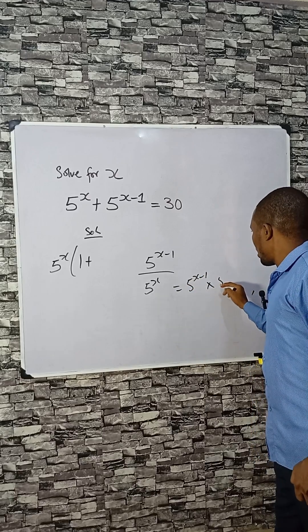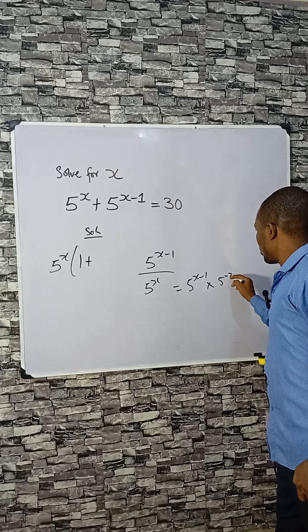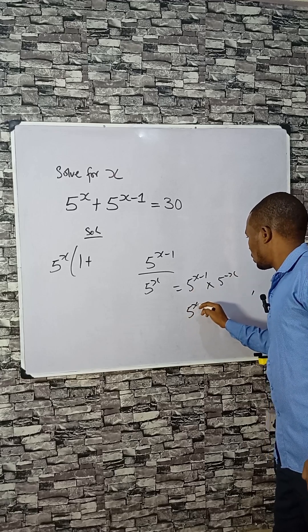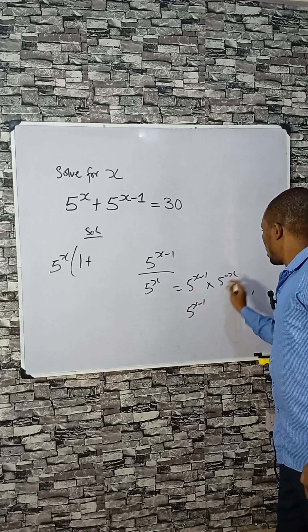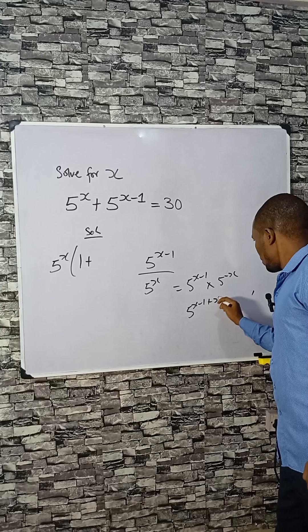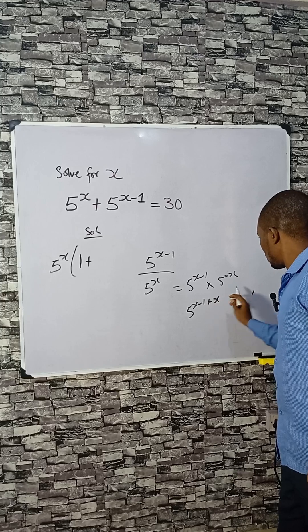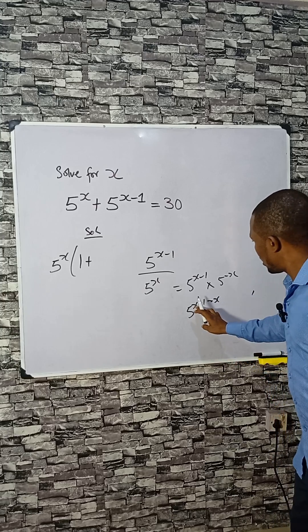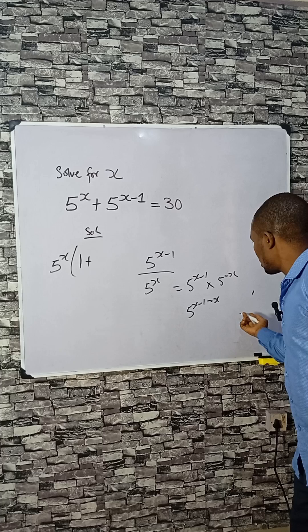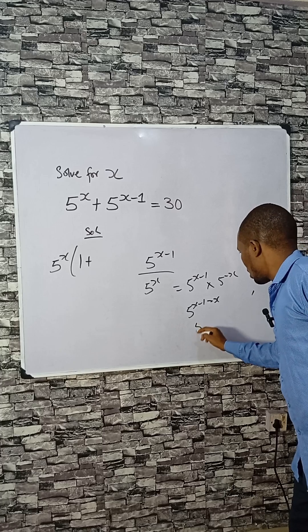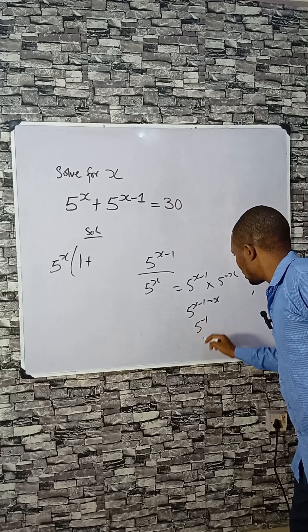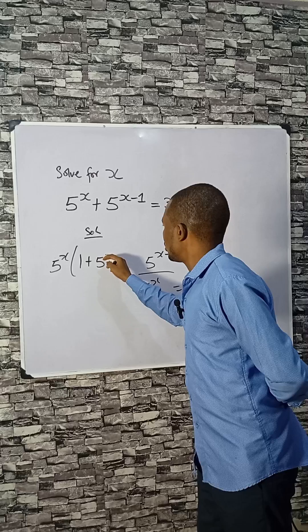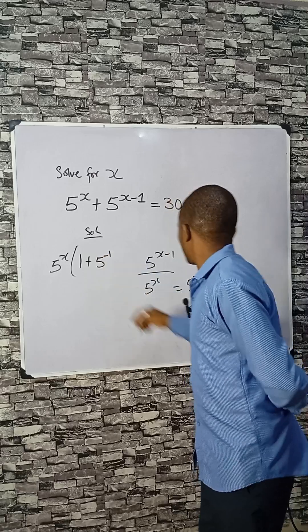Then times 5 raised to the power minus x. Same base, so the exponent becomes x minus x, which equals zero, and we have just minus 1 left, so this becomes 5 raised to the power minus 1.